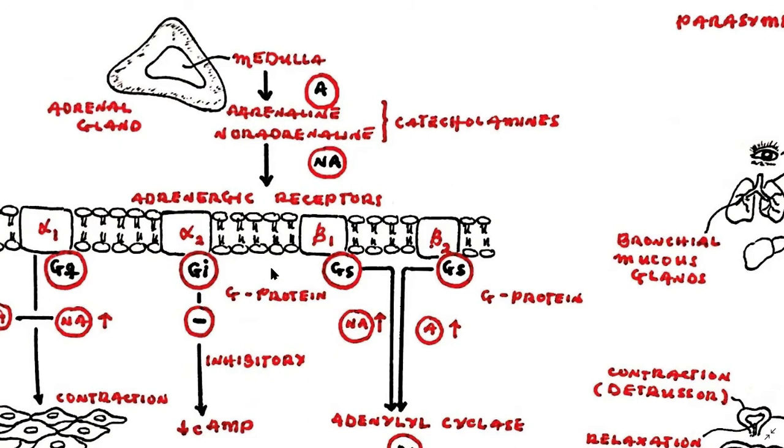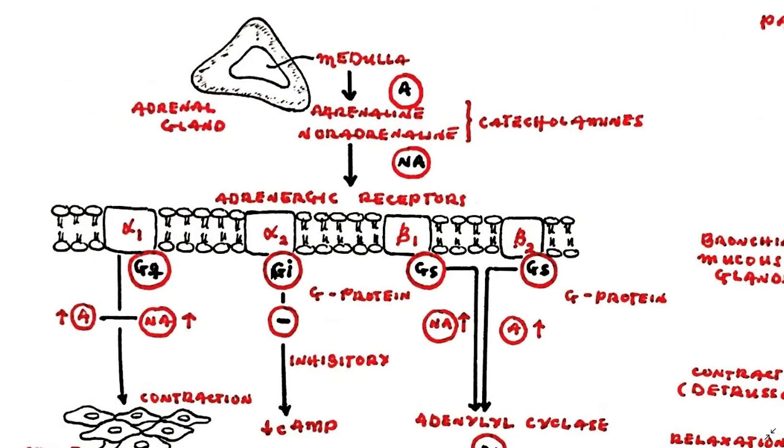There are two main classes of adrenergic receptors, namely the alpha and beta receptors. These alpha and beta receptors are further subdivided into several subtypes. For example, we can have the alpha-1, the alpha-2, beta-1, beta-2, etc. Noradrenaline and adrenaline are equally potent on the alpha-1 receptors.